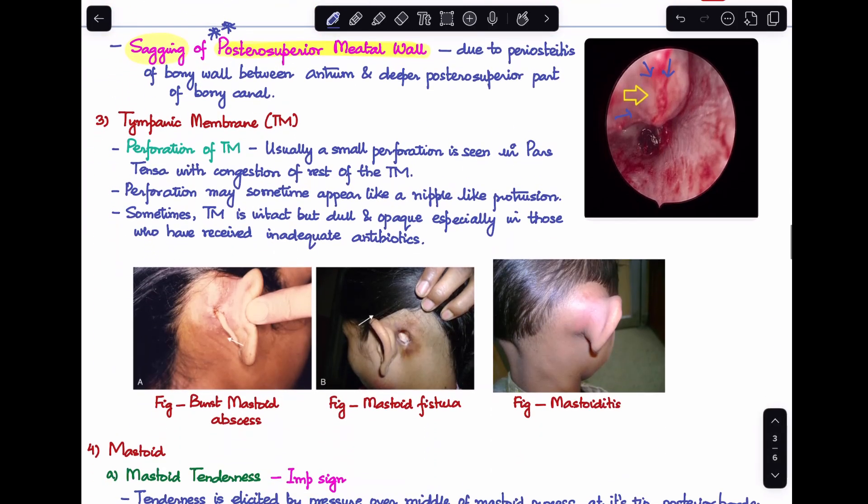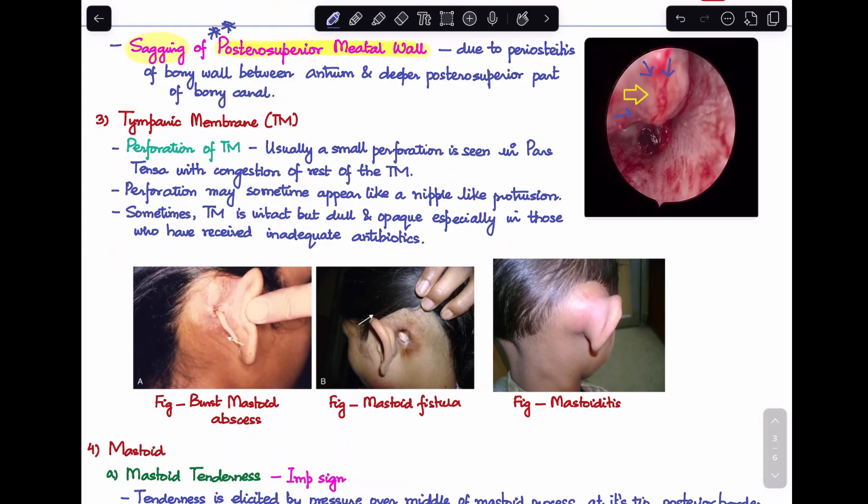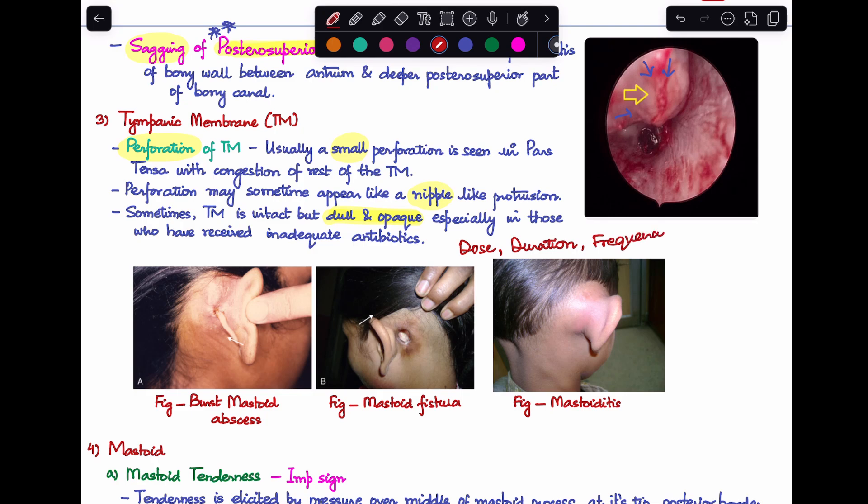Next, the tympanic membrane. We'll definitely see a perforation, usually a small one in pars tensa with congestion of the rest of the tympanic membrane. Sometimes the perforation may appear like a nipple-like protrusion. Sometimes the TM can be intact but dull and opaque, especially in patients who have received inadequate antibiotics. Inadequate means either the dose, duration, or frequency was not adequate.